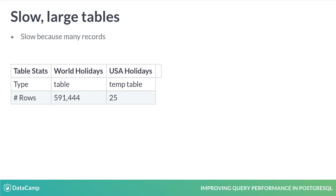Creating the USA temp table will be slow because you create it by querying the large world holidays table. However, it is then stored in memory for the duration of the database session, and queries referencing this USA table will subsequently run faster than those referencing the underlying world holidays table.